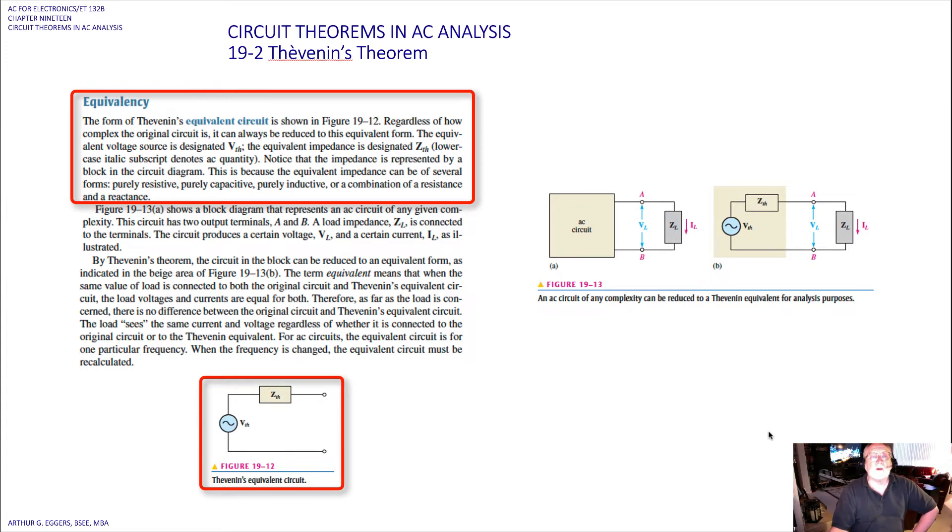Notice that the impedance is represented by a block in the circuit diagram. This is because the equivalent impedance can be of several forms: purely resistive, purely capacitive, purely inductive, or a combination of any of them, resistance and reactive.